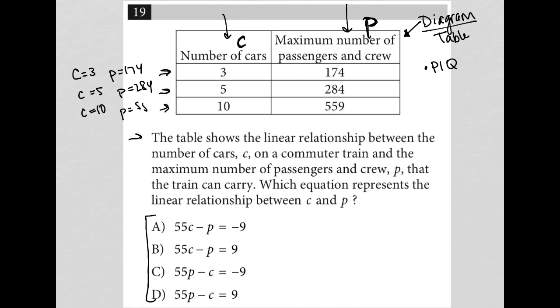Plug it into choice A and I can test whether or not choice A is correct by simply plugging those values in. Let's try that. If C is 3, that means I'd have 55 times 3 minus, if P is 174, becomes minus 174 equals negative 9. I'd have negative 9 is negative 9.